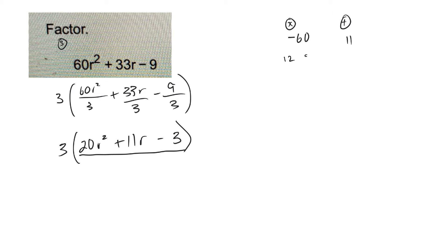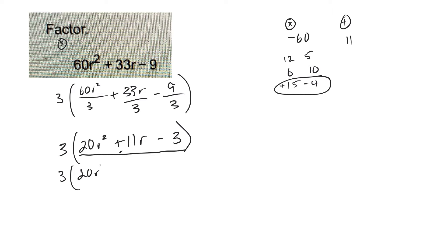Let me try some pairs: 12 times 5 — nope. 6 and 10 — nope. 15 and 4 — those are my numbers. Since the result needs to be positive 11, the 15 has to be positive and the 4 negative. So I rewrite the trinomial as: 3 times (20R squared plus 15R minus 4R minus 3).